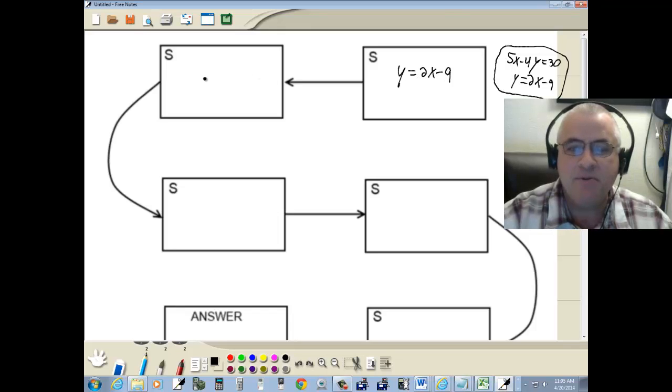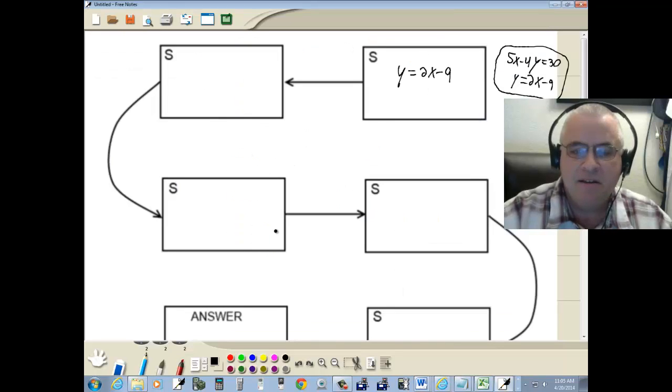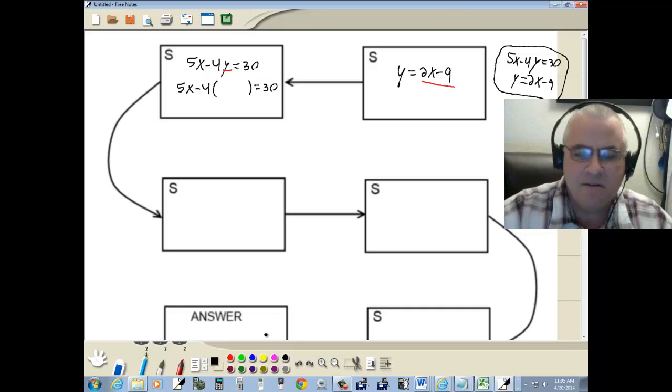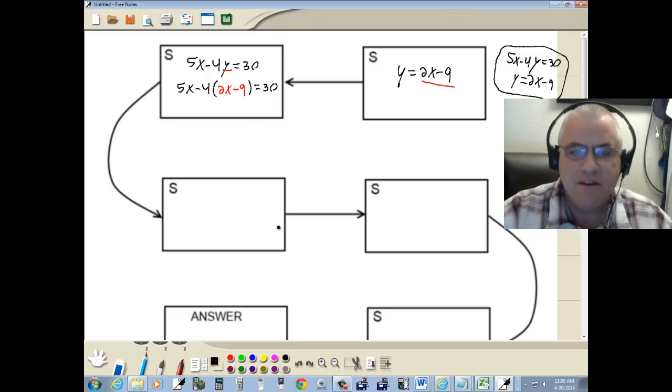Step two. Substitute this into the other equation. Well, the other equation was 5x minus 4y is equal to 30. And over here we just said y is equal to 2x minus 9. It was already solved for y, so I made that step easy. So we're going to replace the y here with 2x minus 9. So we've got 5x minus 4 times 2x minus 9 is equal to 30.